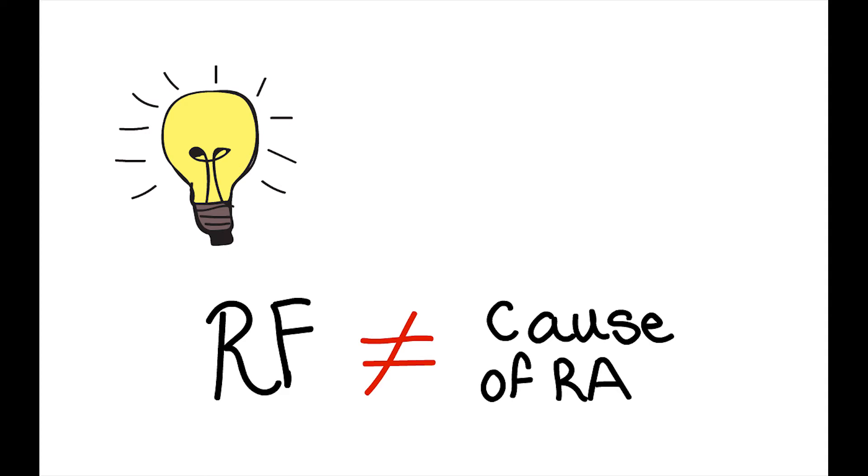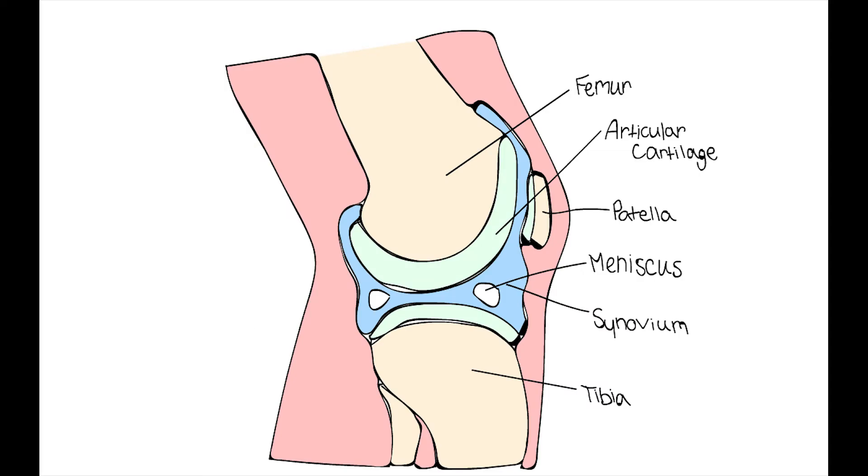However, an important note is RF is not a cause of disease, but is present as a result of disease progression. In late-stage RA, immune cells infiltrate the synovium and eventually create germinal centers, a place of replication for immune cells that should not be present in healthy synovium.